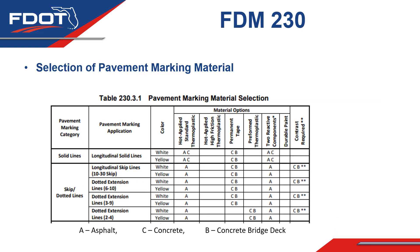Each column in the table represents a pavement marking application, while each row represents a pavement marking material option. The letters within the table cells represent pavement marking substrates that are valid for a particular combination of pavement marking application and pavement marking material.